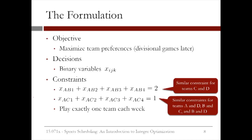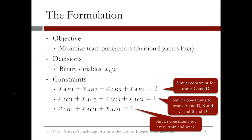Our last type of constraint is that each team should play exactly one other team each week. This means A should play B, C, or D in week 1. This is modeled with the constraint: XAB1 + XAC1 + XAD1 = 1. Exactly one of these decision variables will be equal to 1, meaning that A will play that team in week 1. We'll have a similar constraint for every team and week pair.